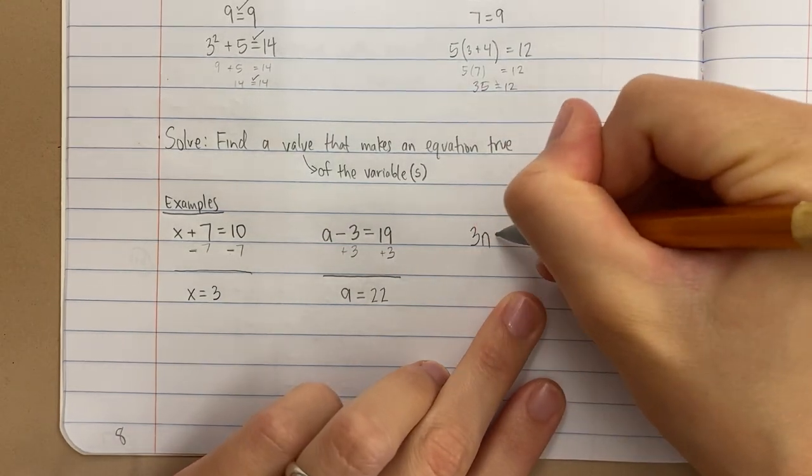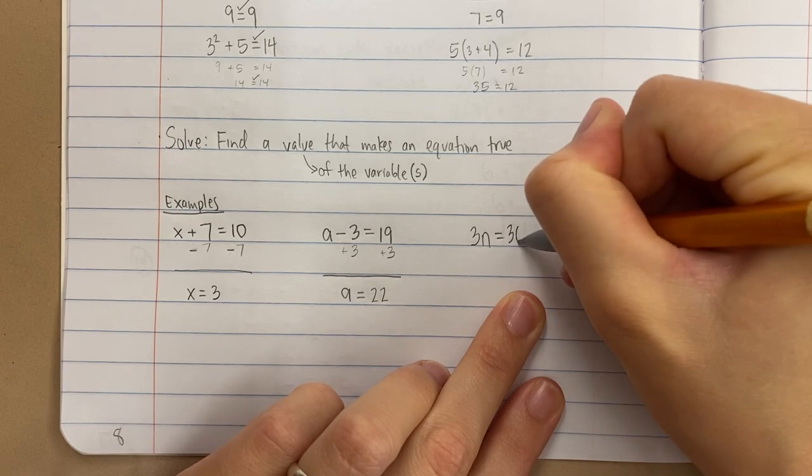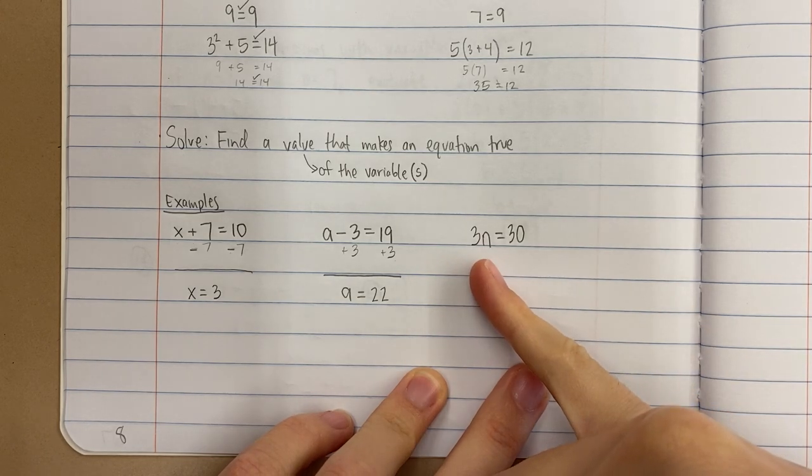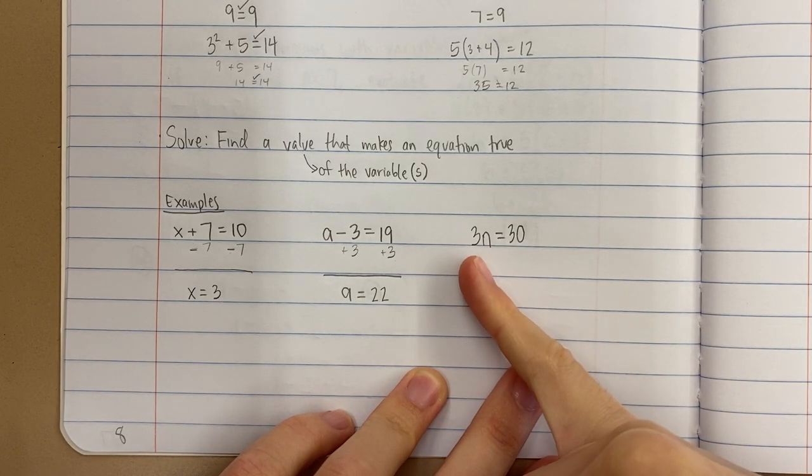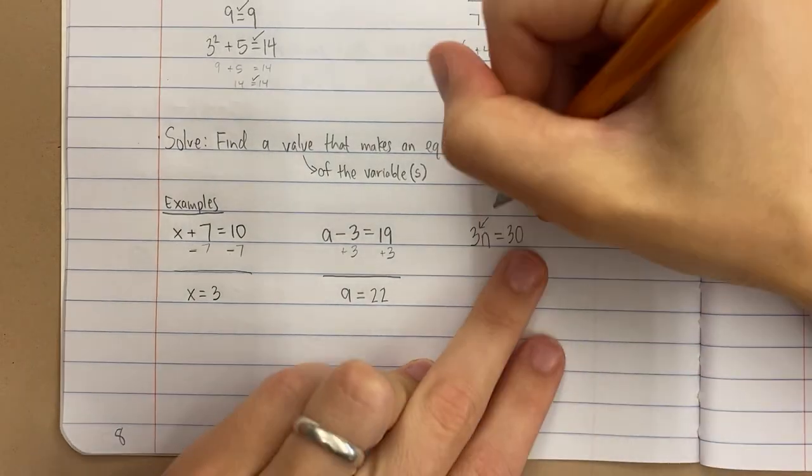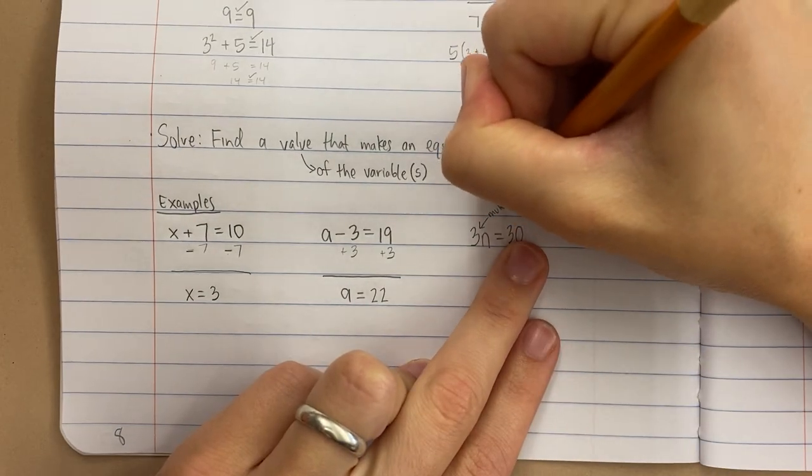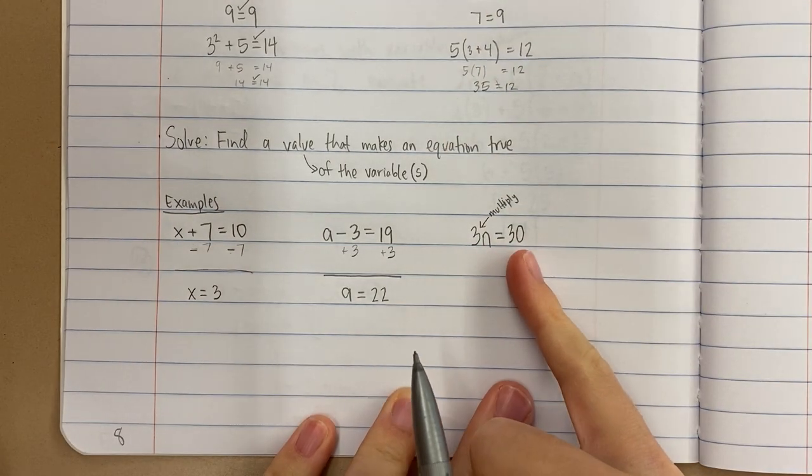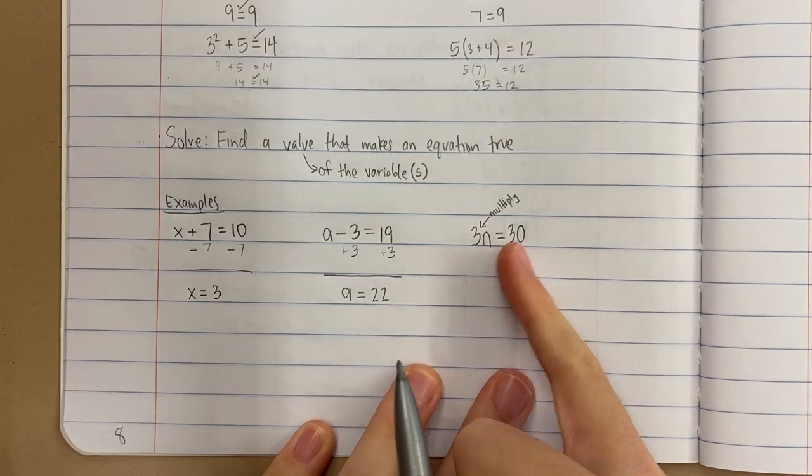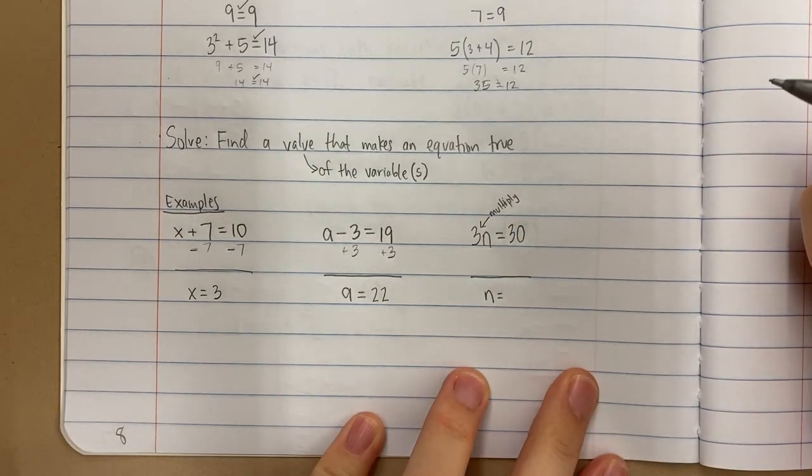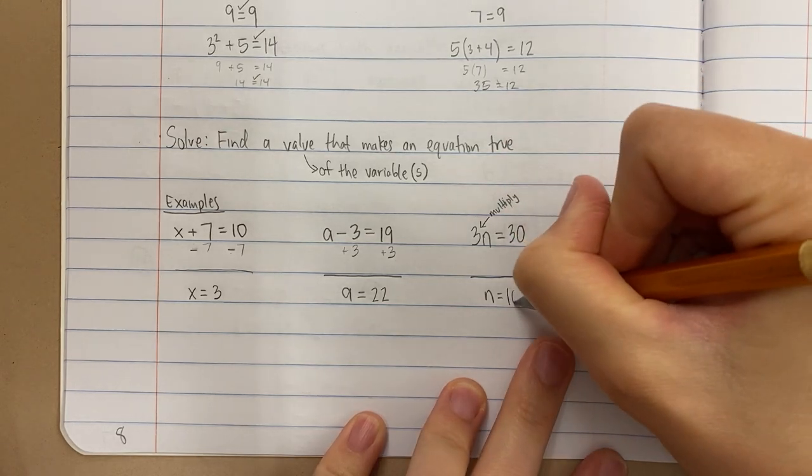Here's another example. 3N equals 30. Again, notice we have a different letter. It doesn't matter. It's just a letter means a number we don't know the value of. This is 3. What is this? When there's a number right next to a letter, that means multiply. This says 3 times N equals 30. So what number, 3 times what number equals 30? And you might think, 3 times 10 equals 30.